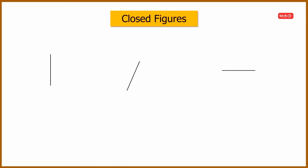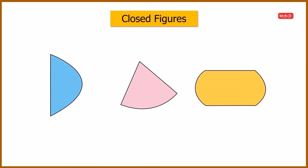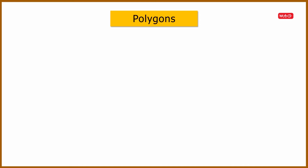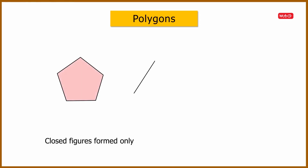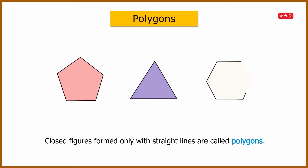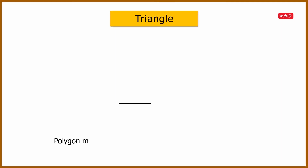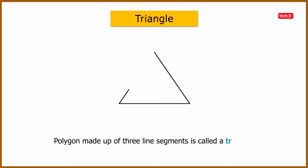Closed figures formed only with straight lines are called polygons. A polygon made up of three line segments is called a triangle.